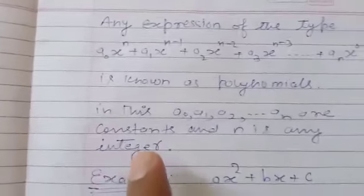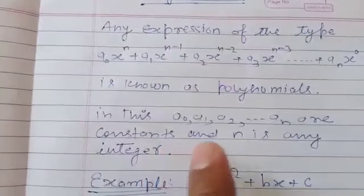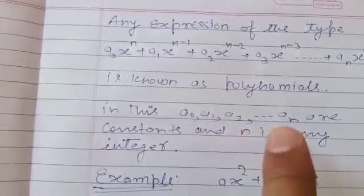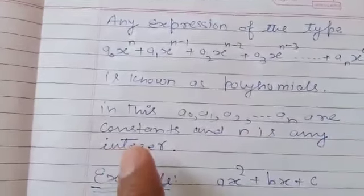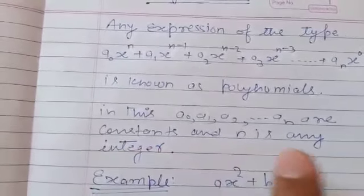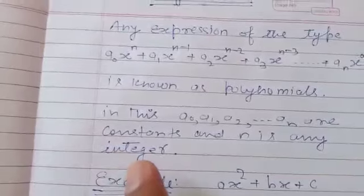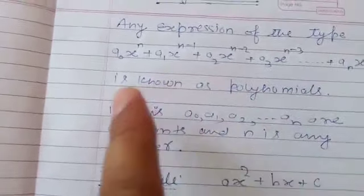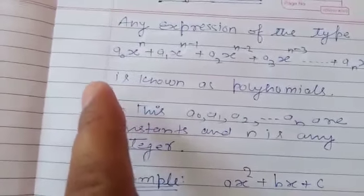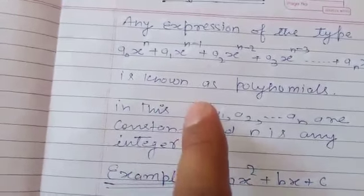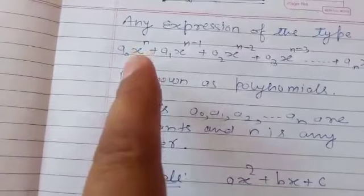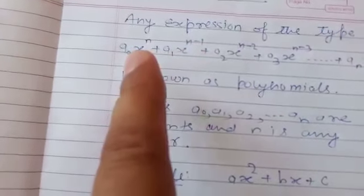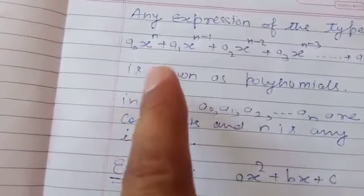In this, a₁, a₂, a₃, ... aₙ are constants and n is any integer. a₀, a₁, a₂ can be any constants like 1, 2, 3, 4, etc. And n, the power you see, will always be an integer.